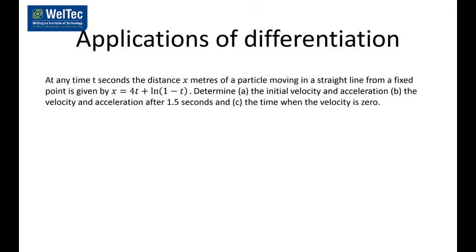This question is the same as all the others. You need to find the velocity and the acceleration — find the velocity by differentiating, find the acceleration by differentiating again. The only problem is the negative sign in there, so you need to be a little bit careful about that. Remember that initial velocity means when t is equal to zero. Finding the velocity function and substituting zero gives an initial velocity of 3 meters per second.